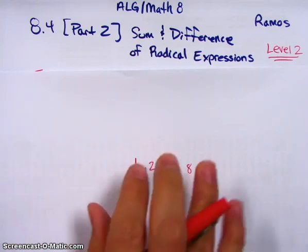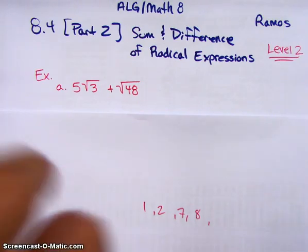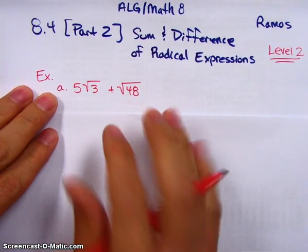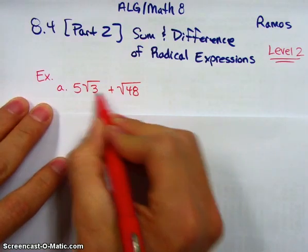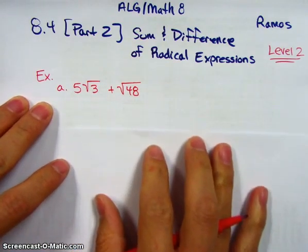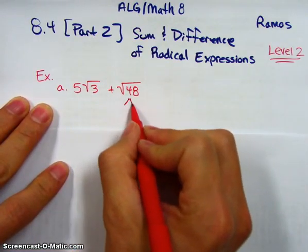So we're going to take a look at problems just like this one. Let's get it done now. As you noticed from the video before, you have to have the same radical number inside, and I don't here. So what I want to do is try to simplify square root of 48.